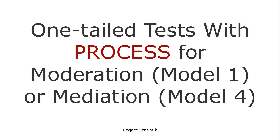The same applies to moderation with process model 1. Maybe you have a hypothesis that you have a positive interaction term — that the moderator amplifies the effect — or you have the hypothesis that you have a negative interaction term. In those cases, it's possible to use a one-tailed test.